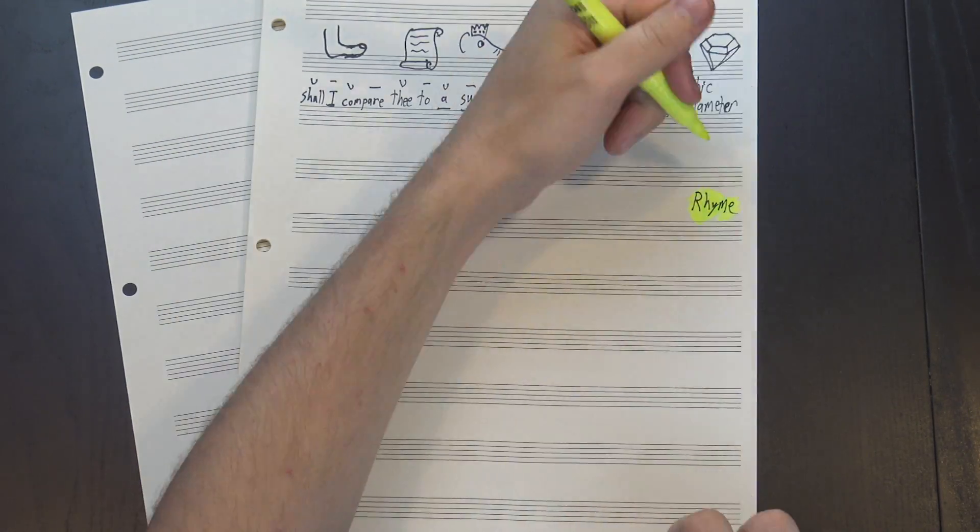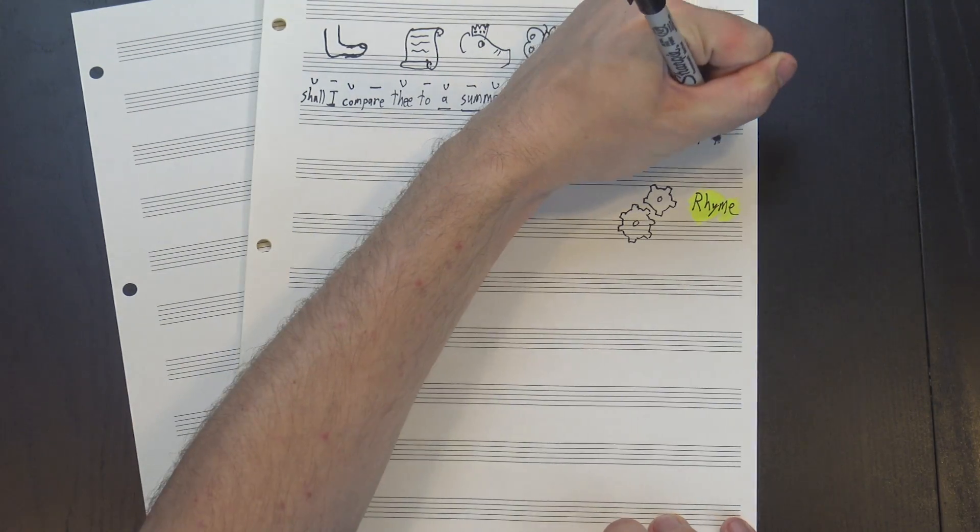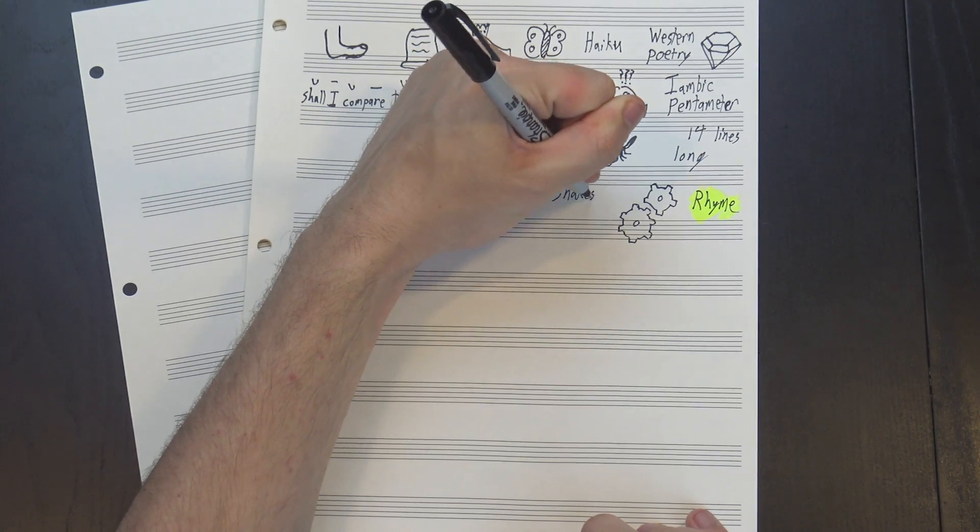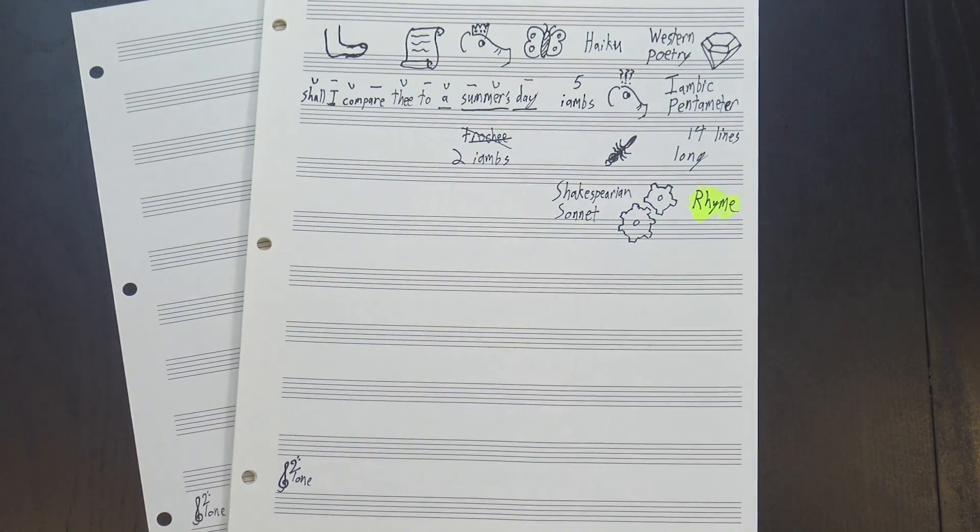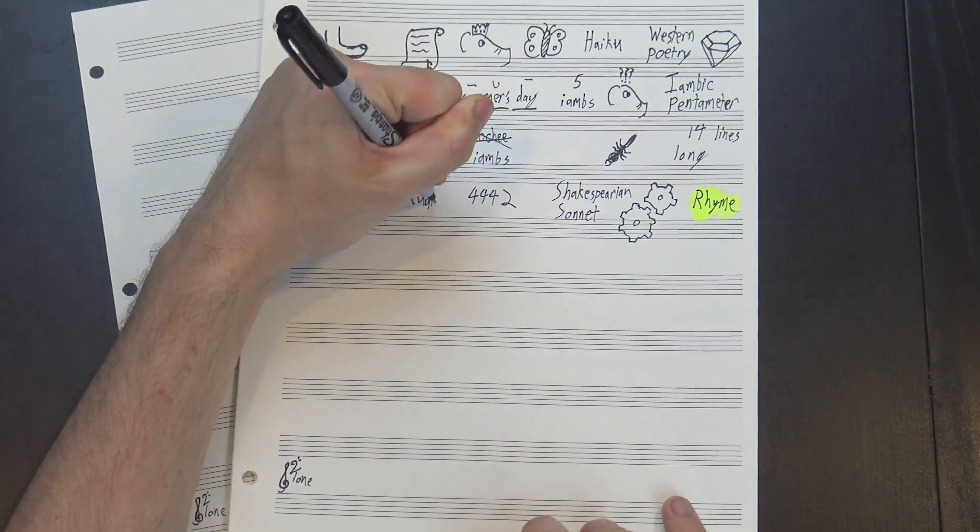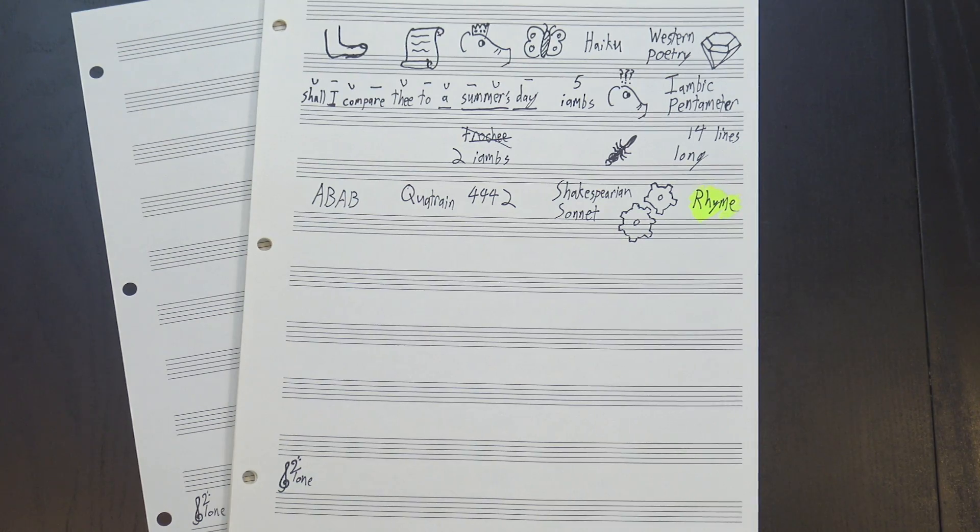The other important part of poetry is rhyme, and here, sonnets get much more complicated. There's a general agreement that sonnets are fourteen lines long, but there's a couple different ways to fill them in. The simplest one is probably the Shakespearean sonnet, which breaks it into three groups of four lines with an extra two at the end. A group of four lines is called a quatrain, and each quatrain has the rhyme scheme A-B-A-B, meaning that the first line rhymes with the third, and the second rhymes with the fourth.